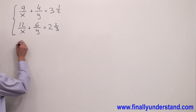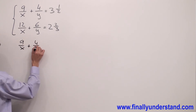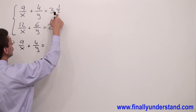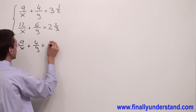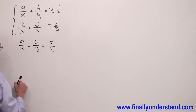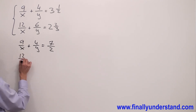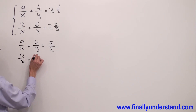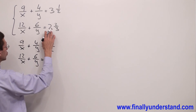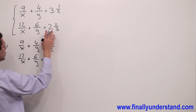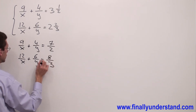So we have 9 over x plus 4 over y equals 2 times 3, which equals 6, plus 1, equals 7 over 2. This is my first equation. The second equation is 12 over x plus 6 over y equals 3 times 2, equals 6 plus 2, equals 8 over 3.